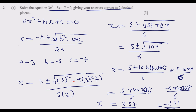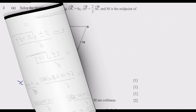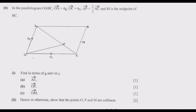So these are the two values of x. Now let us look at question 2b. In the parallelogram OABC, OA equals vector a, OC equals 6 vector c, AP equals two-thirds of vector AC, and M is the midpoint of BC. Since this is a parallelogram, OC equals 6 vector c and BC equals vector a — that is a property of a parallelogram.